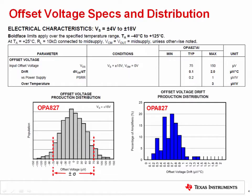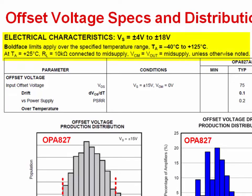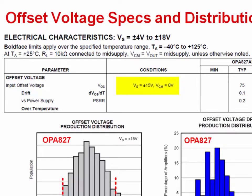This slide introduces op amp specifications for offset. The top of the specification table shows the test conditions for all parameters in the datasheet. In this example, the temperature is 25 degrees Celsius, the load resistance is 10 kilo ohms, the load is connected to mid-supply, and the common mode voltage is set to mid-supply. These conditions are true unless otherwise specified. For the offset voltage specs, the supply voltage is plus or minus 15 volts, and the common mode voltage is 0 volts.